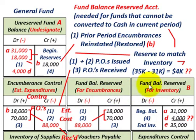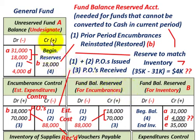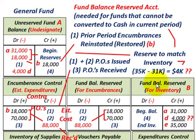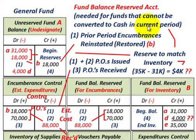Along with the inventory account, you're going to have a fund balance reserved for inventory. So you're going to have several different fund balance reserved accounts and also this unreserved undesignated fund balance account. The fund balance reserved for inventories is for funds that cannot be converted into cash in the current period — that would be like our inventory account.